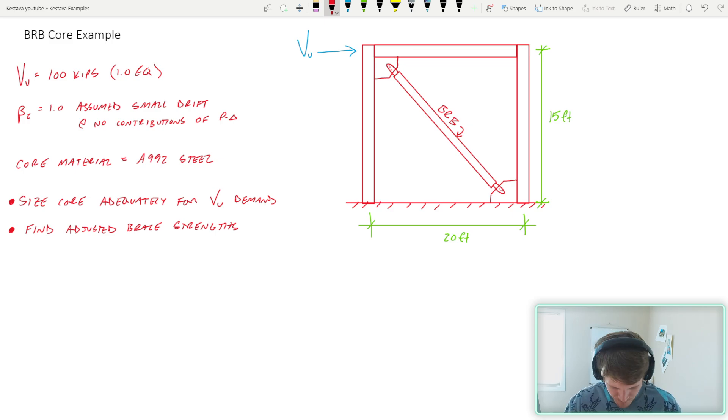And we have two tests today. We're going to size our core adequately for the demand at the story, and then we're going to find the adjusted brace strengths. If you aren't sure about that one, you're in the right spot because we're going to learn about both of them. Today is just the tip of the iceberg. We're doing a single bay, not multi-story or anything like that. But in the future, if you'd like that, let me know in the comments.